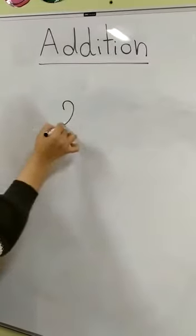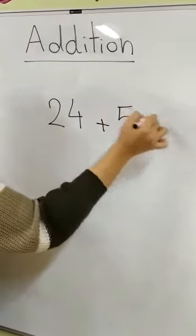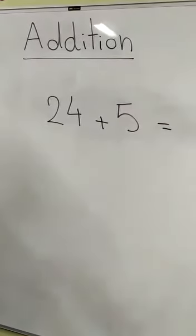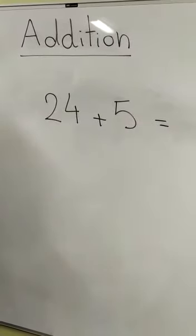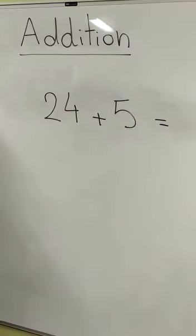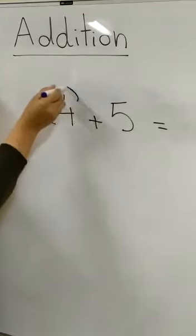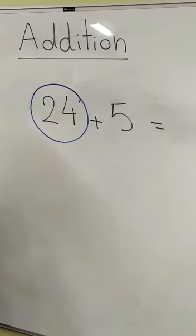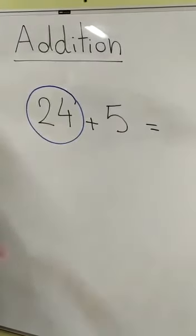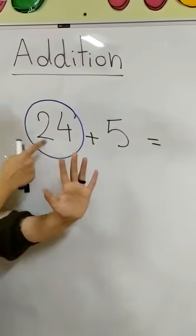Now let's take bigger numbers: 24 plus five equals. What sign is it? Plus! And plus means more. Where's the bigger number? 24! Let's take the 24 and put it in our mind, and put the smaller number on our fingers. All of you, show me five fingers. Super!